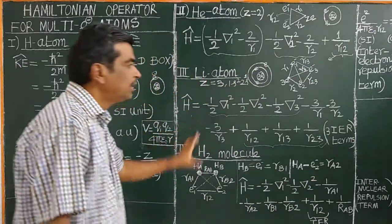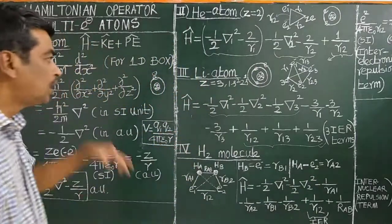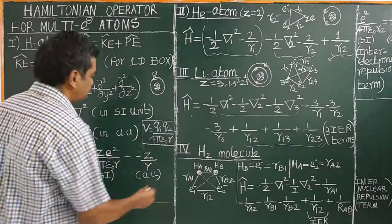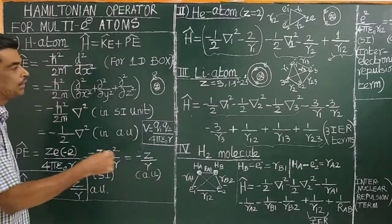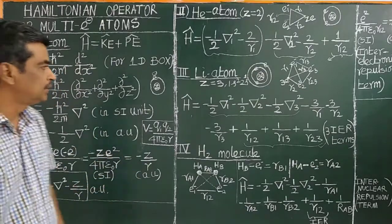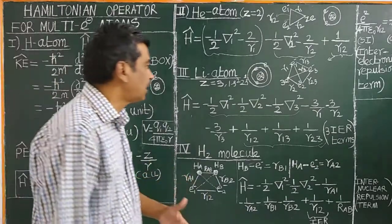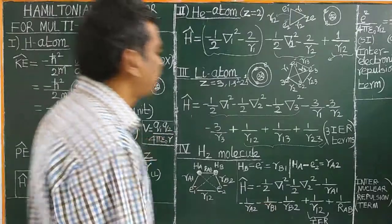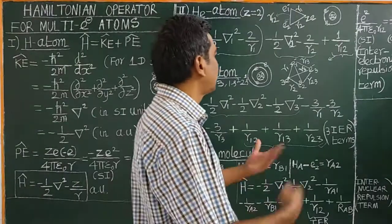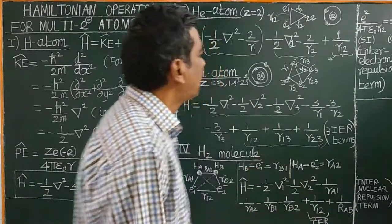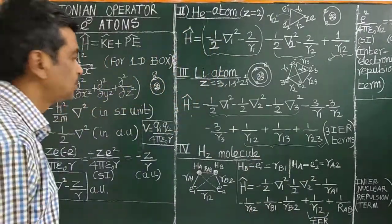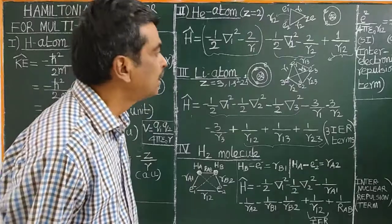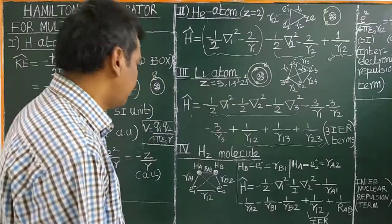The Hamiltonian operator tells us that H-cap psi equals E psi. By solving the Schrödinger equation, we can obtain the energies as well as the atomic orbitals, that is, the wave functions. Wave functions are nothing but atomic orbitals.